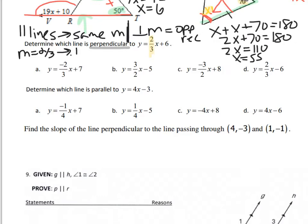So my original slope is 2/3, which means my perpendicular slope is negative 3/2. And then I just look at my answer choices and find the one that says negative 3/2. Winner, winner, chicken dinner.